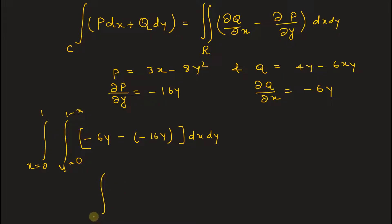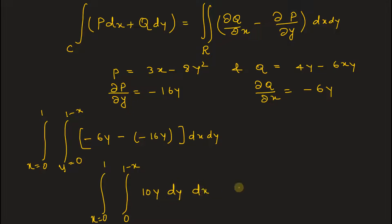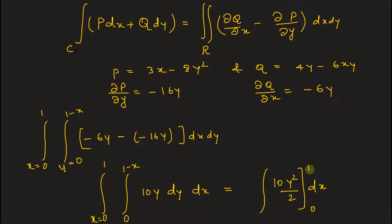We can write this as the integral from x equals 0 to 1, and y equals 0 to 1 minus x, of 10y dy dx. First we integrate with respect to y, which gives 10y squared over 2, evaluated with the limit from 0 to 1 minus x, and the outer integral from x equals 0 to 1.